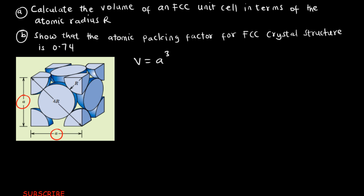Considering this right-angle triangle, we can apply Pythagoras' theorem: A² + A² = (4R)². The square of the two sides added equals the square of the diagonal length, which is 4R. Adding the two sides gives 2A² = 16R².